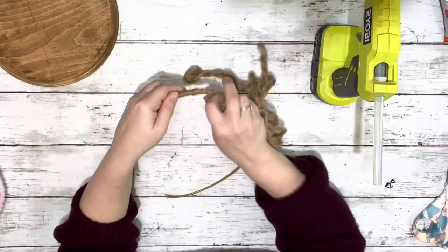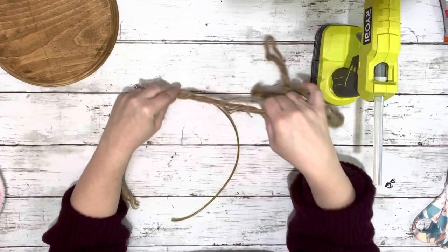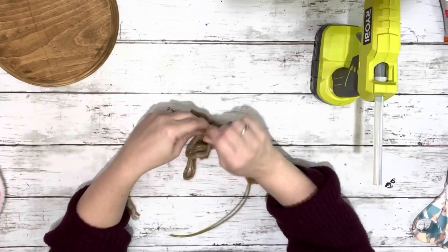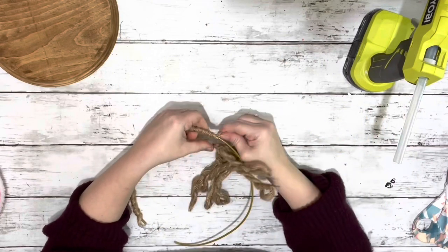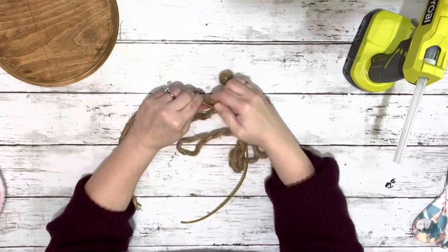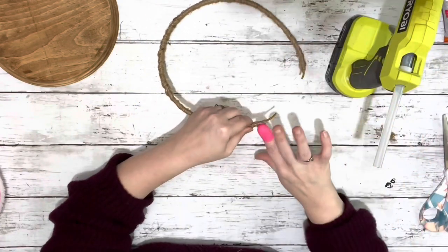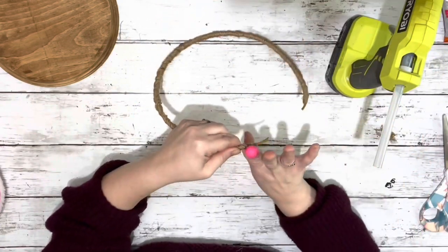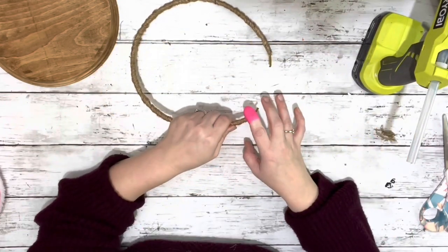I just kept wrapping it around, and towards the end, just making sure I had a little piece of the ring left at the bottom. After it was completely filled in, I cut off a little bit of the excess and used some hot glue to make sure that it was all stuck down on the ends.